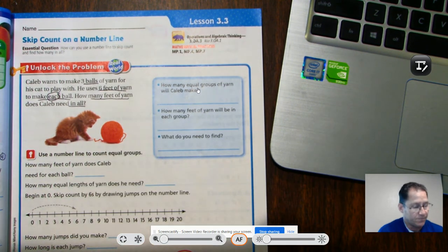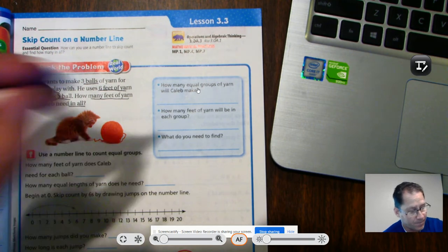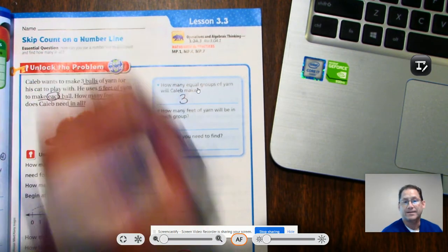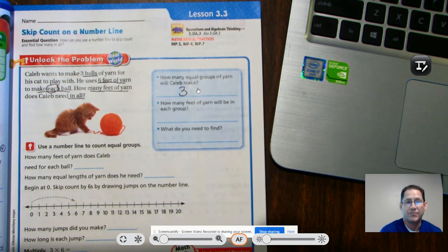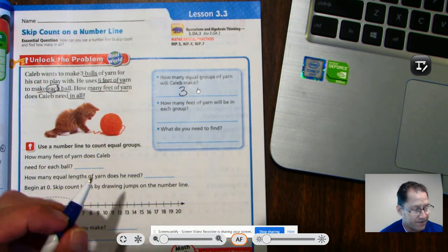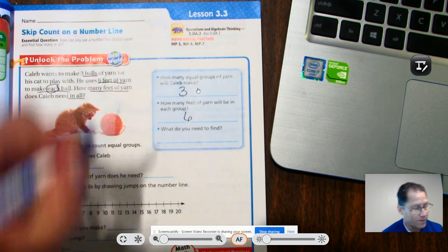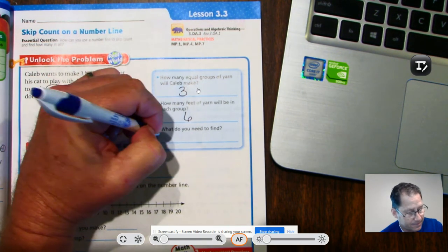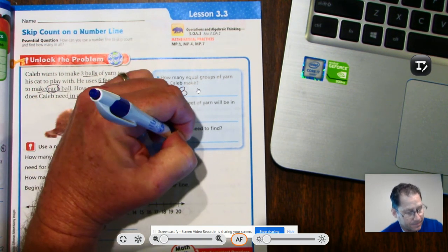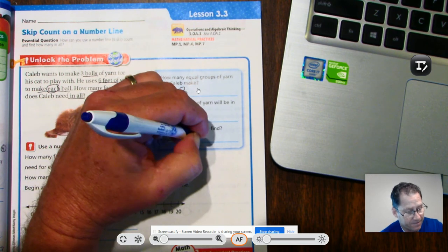How many feet of yarn in all? So how many equal groups of yarn will Caleb make? Three. The three balls of yarn represent three equal groups. How many feet of yarn will be in each group? Six feet. What do we need to find? How many feet in all?